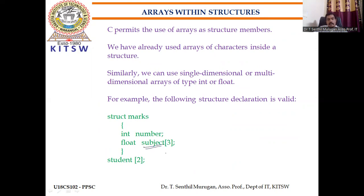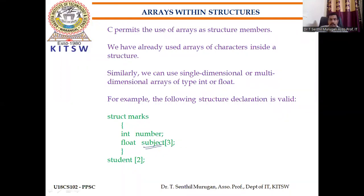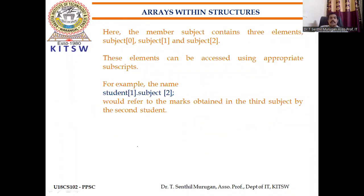We can also use an array inside a structure. Instead of writing float subject1, float subject2, float subject3 separately, we can declare a float array for subjects. The member subject contains three elements: subject[0], subject[1], subject[2], accessed using student[1].subject[0], student[1].subject[1], and so on.